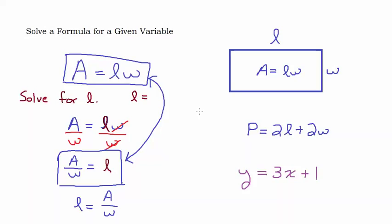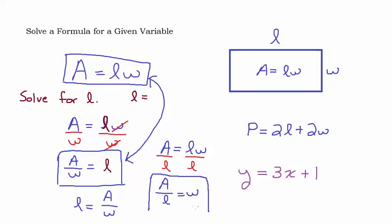We could also solve this formula for W by dividing both sides by L, giving us A divided by L equals W. So we have three versions of the same formula: A equals LW (solved for A), L equals A over W (solved for L), and A over L equals W (solved for W in terms of A and L). The key is to use the same strategies as solving equations — do something to both sides to get the variable by itself.